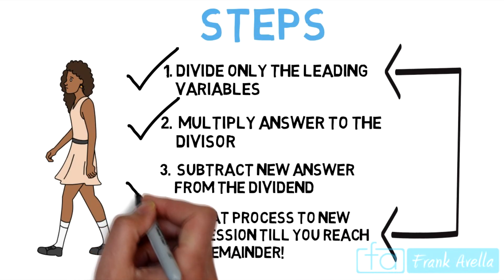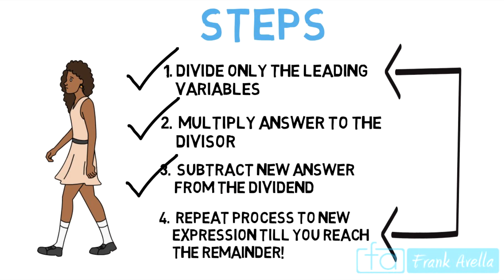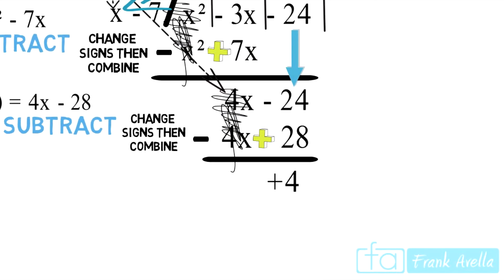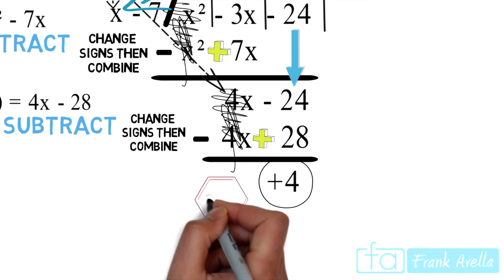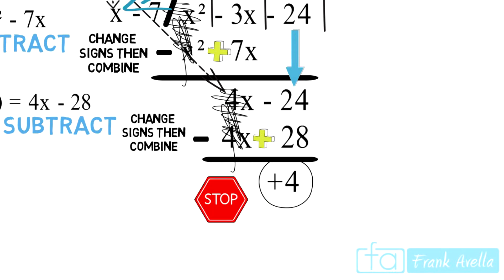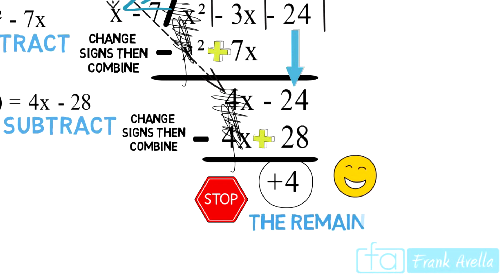We've completed the subtraction step. The last step tells us to stop when we hit the remainder. We're left with simply positive 4 and nothing left to bring down, so at this moment we stop — we've reached the remainder.